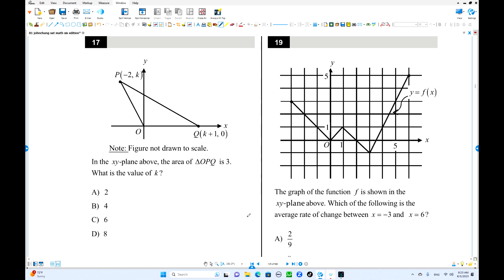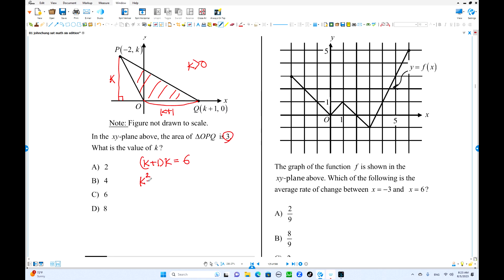Number 17, the area of this triangle OPQ. How can you find the area of this? Base times height. This base is k plus 1, and this height is perpendicular to the base. This is k also, k is positive. Base times height divided by 2 is 3, times 2 is 6, that's the area. So k squared plus k minus 6, you can factor. K plus 3, k minus 2 equals 0. We can find k equals negative 3 and k equals 2, but k cannot be negative, so only k equals 2 is the answer.